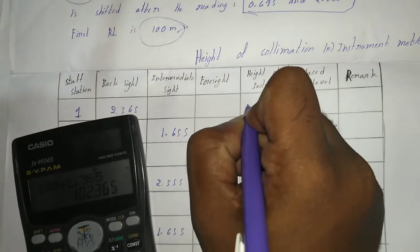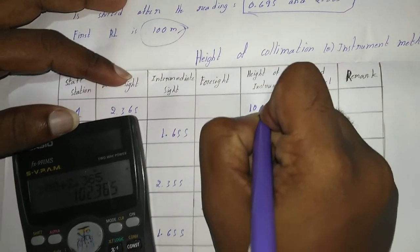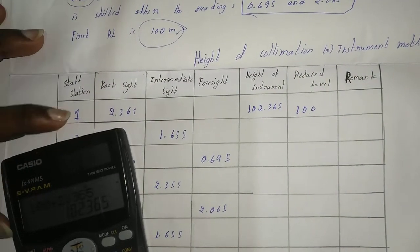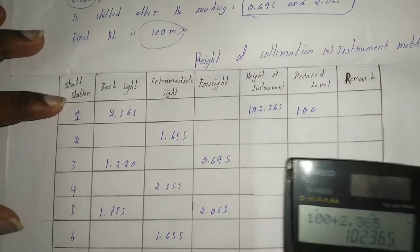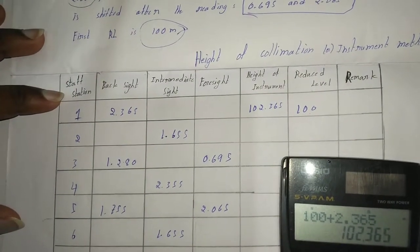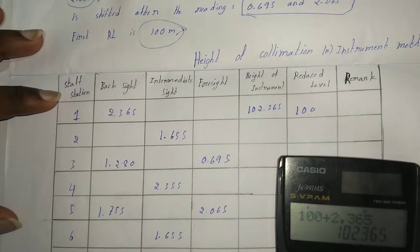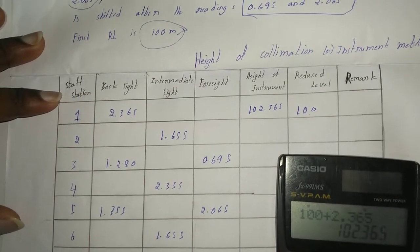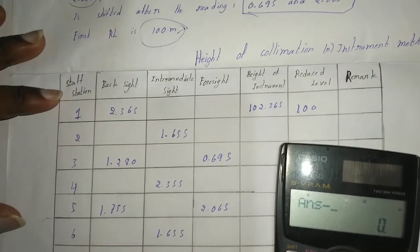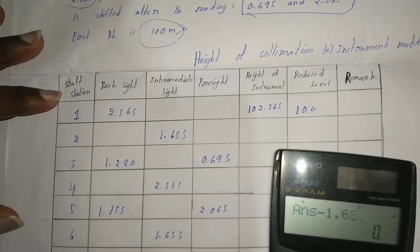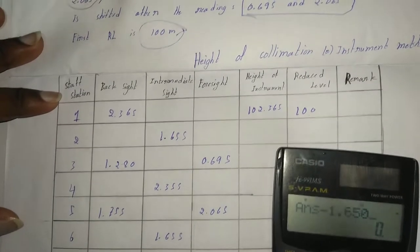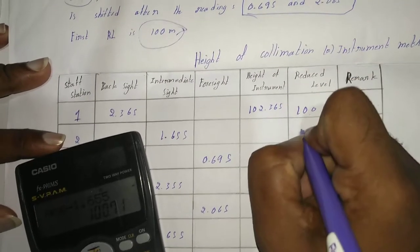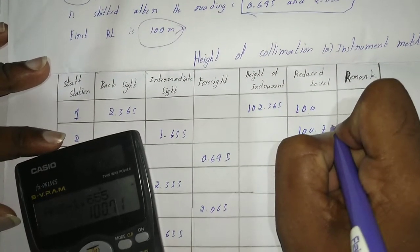Our first value is reduce the back intermediate side from height of instrument. So our second RL is 100.71.